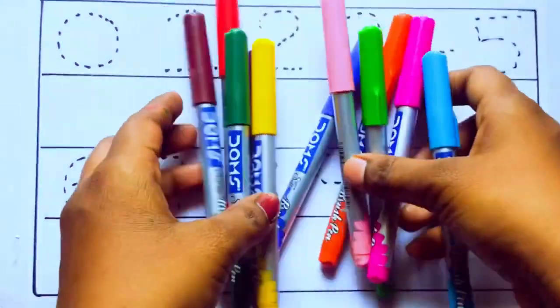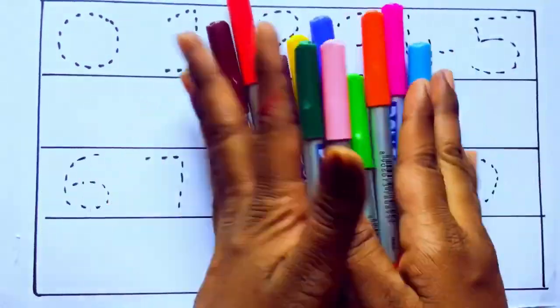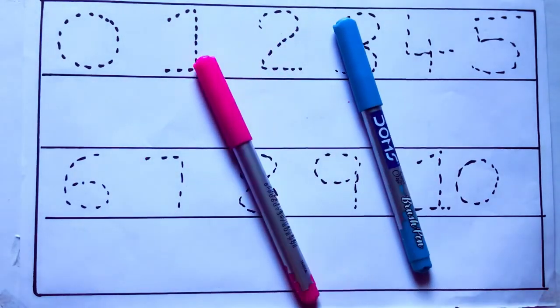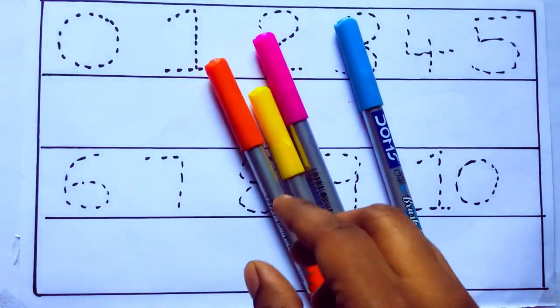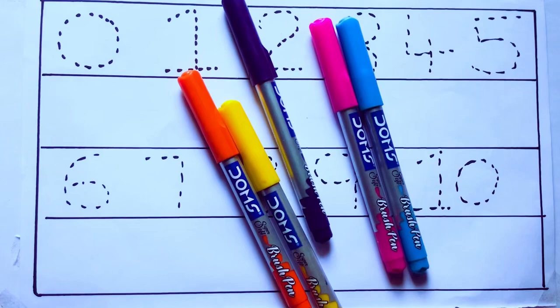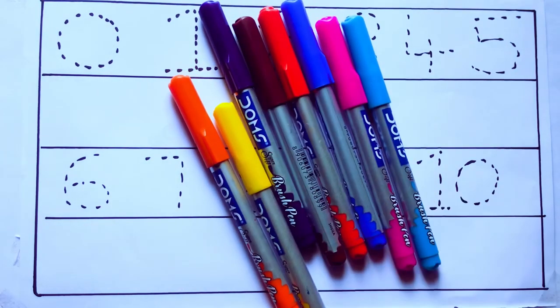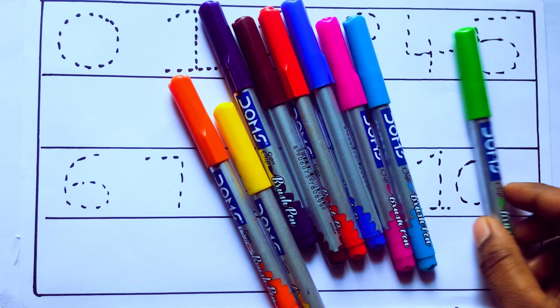Let's learn some colors. These are all the color pencils. Let's learn the names. Sky blue color, pink color, yellow color, orange color, violet color, blue color, brown color, red color, green color.